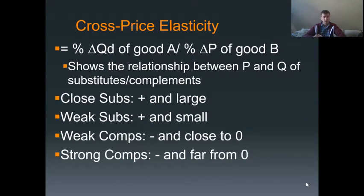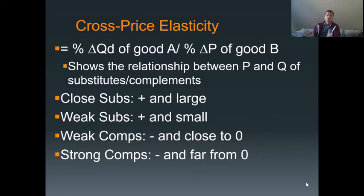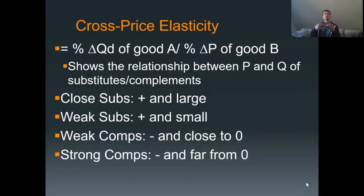If they have a negative relationship — so if the quantity of good A increases when the price of good B decreases — that lets you know about complements. That's what happens with complements: when the price of a complement decreases, the demand for the other good increases. You can do the same sort of analysis for strong versus weak complements. If it's close to zero, it's a weak complement; if it's further from zero, it is a strong complementary good. It's important to remember that this looks at positive and negative, so even though price elasticity of demand always uses the absolute value, here we want to keep the negative number if it is there. We need to know whether or not this is positive or negative.